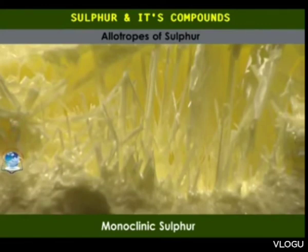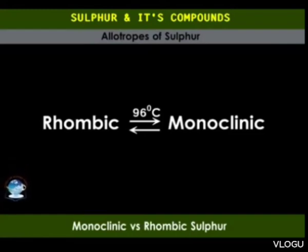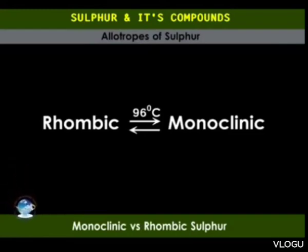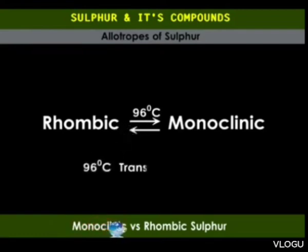Thus, below 96 degrees Celsius, crystalline sulfur exists in the rhombic form. And above 96 degrees Celsius, it exists in the monoclinic form. The temperature 96°C is in this case called the transition temperature.